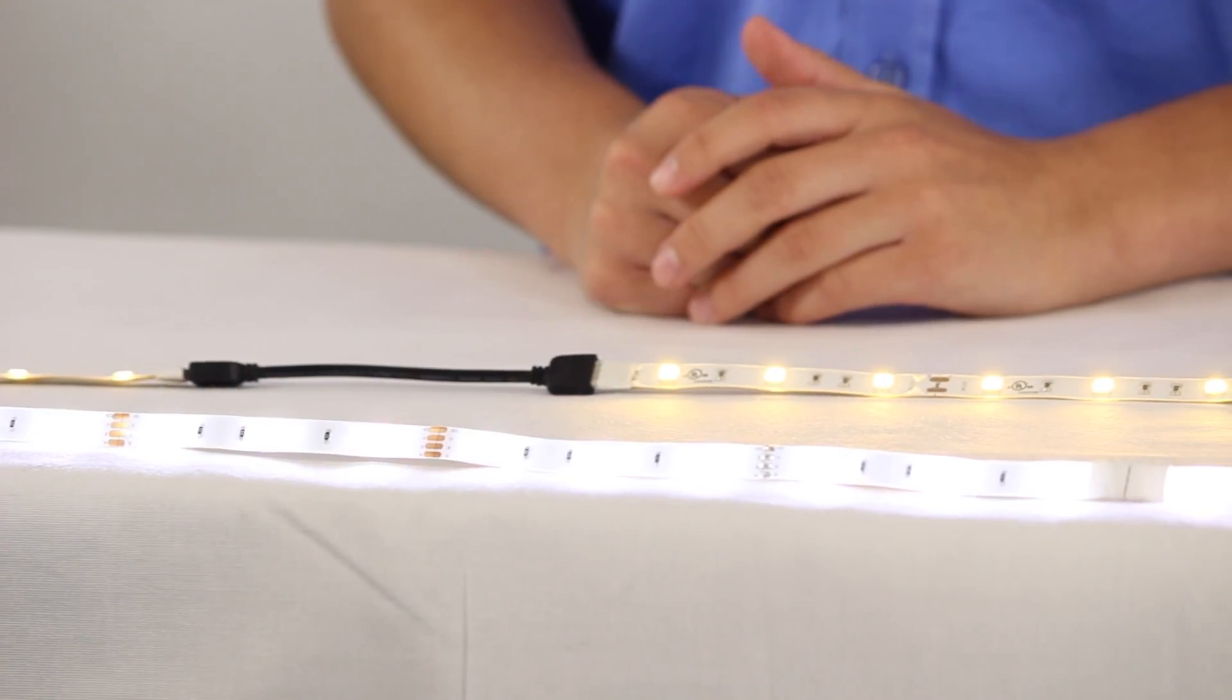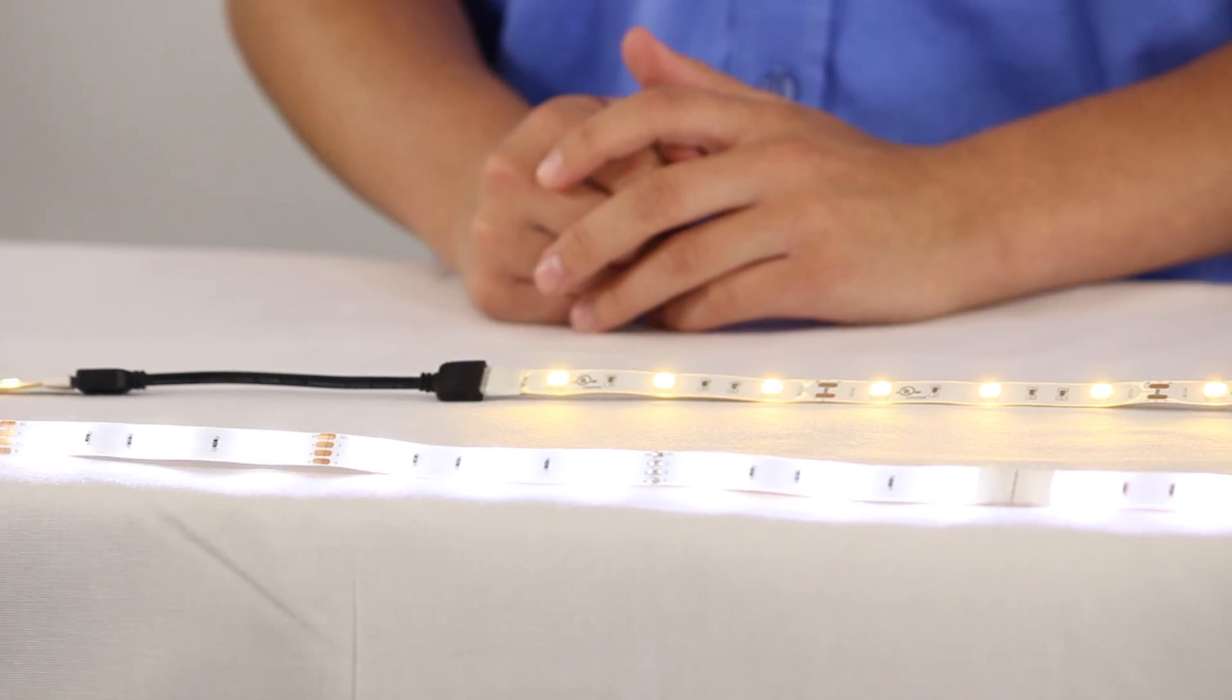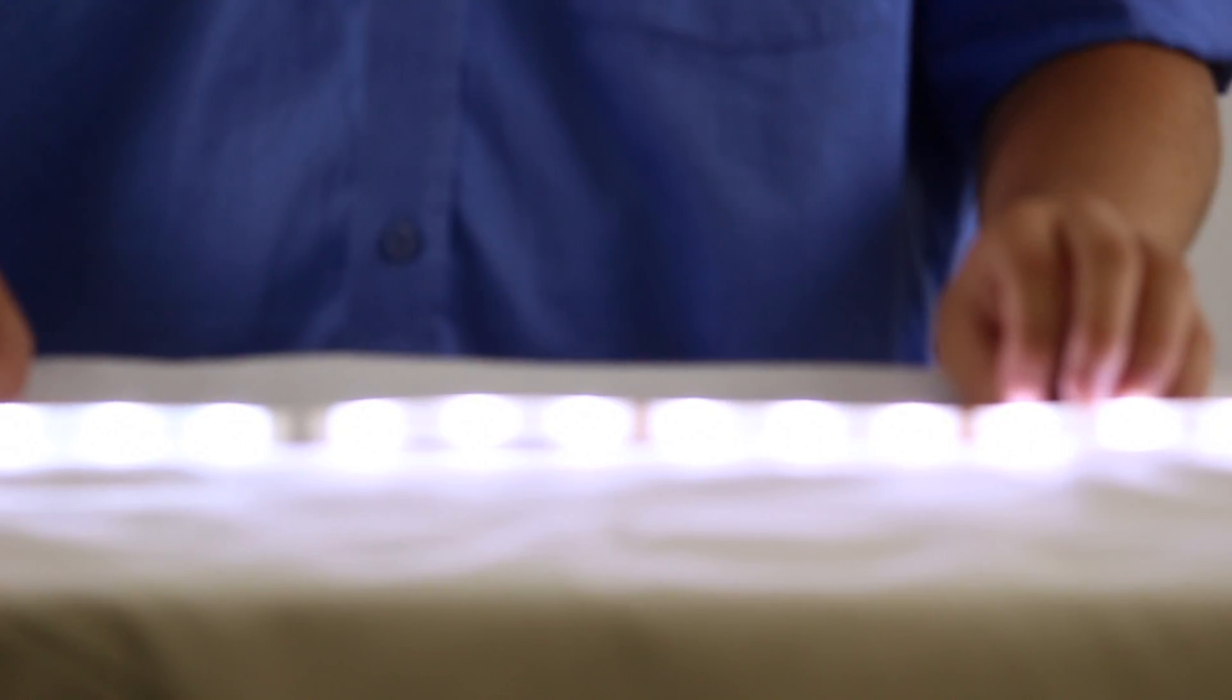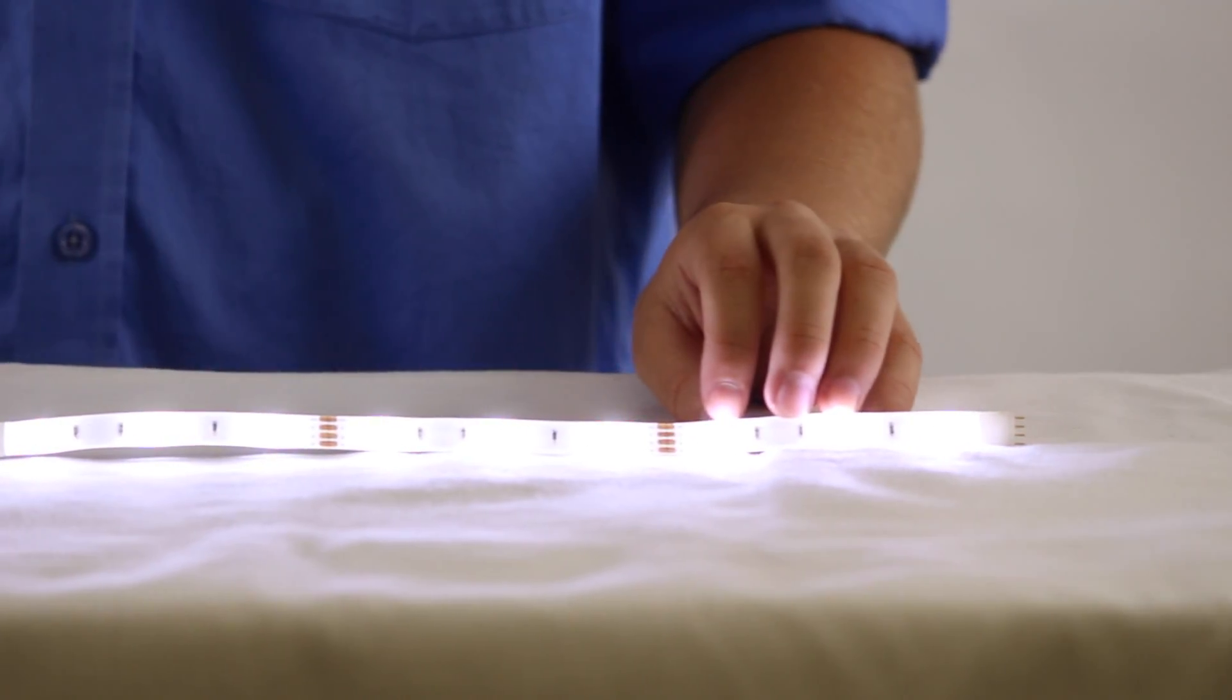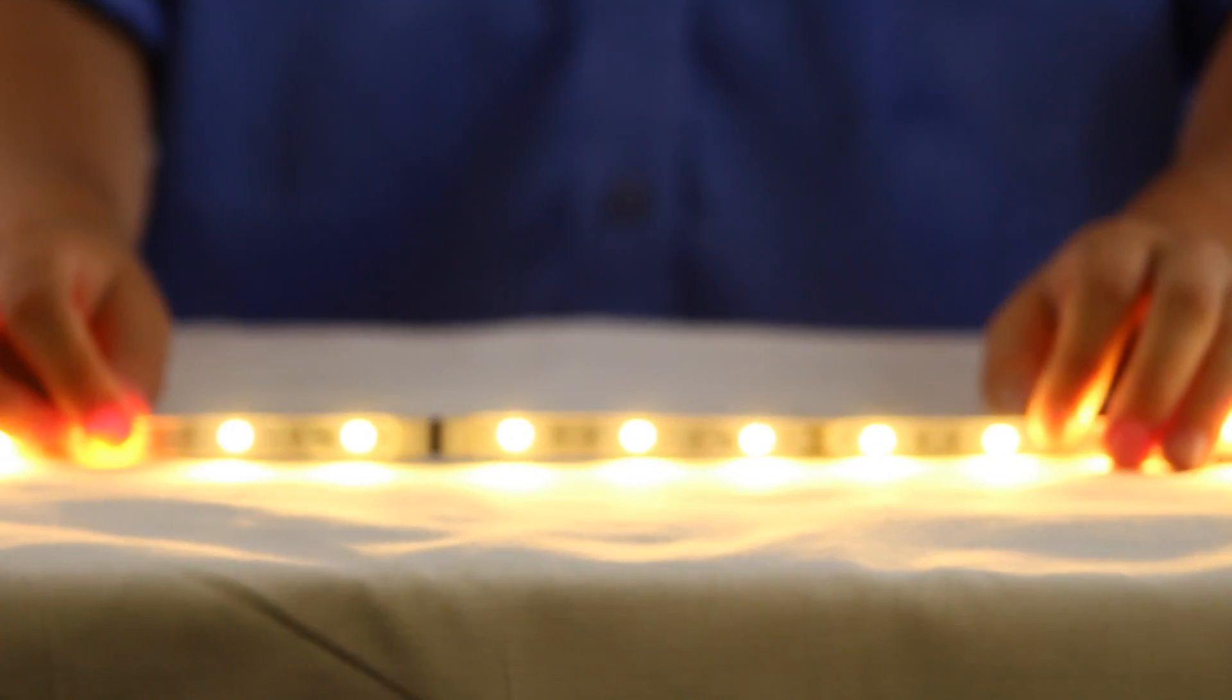AQ Lighting has designed a tape light system so simple that anybody can install it. It comes in both a cool light, which is about 5,000 Kelvin, and warm light, approximately 3,000 Kelvin.